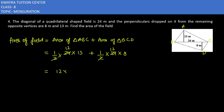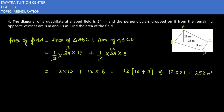2 and 24 cancel to give 12 again. So you get the value as 12 into 13, and the second value as 12 into 8. That gives 12 into 21, which equals 252 meter square. So this is the area of the field for question number 4.